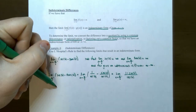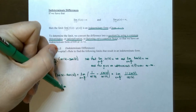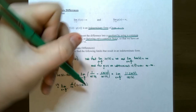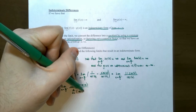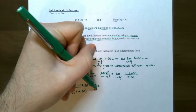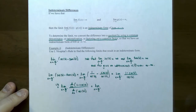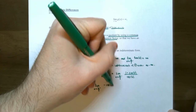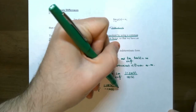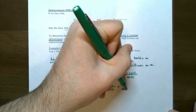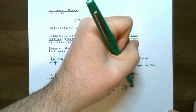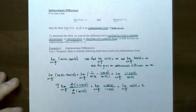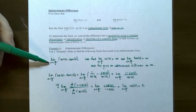Using L'Hôpital's rule, keeping the limit notation, take the derivative of the numerator and denominator. The derivative of the numerator is negative cosine of x, and the derivative of the denominator is negative sine of x. This gives the limit as x approaches pi over 2 from the left of cotangent of x, which equals 0. So the y-values approach 0 as x approaches pi over 2 from the left.